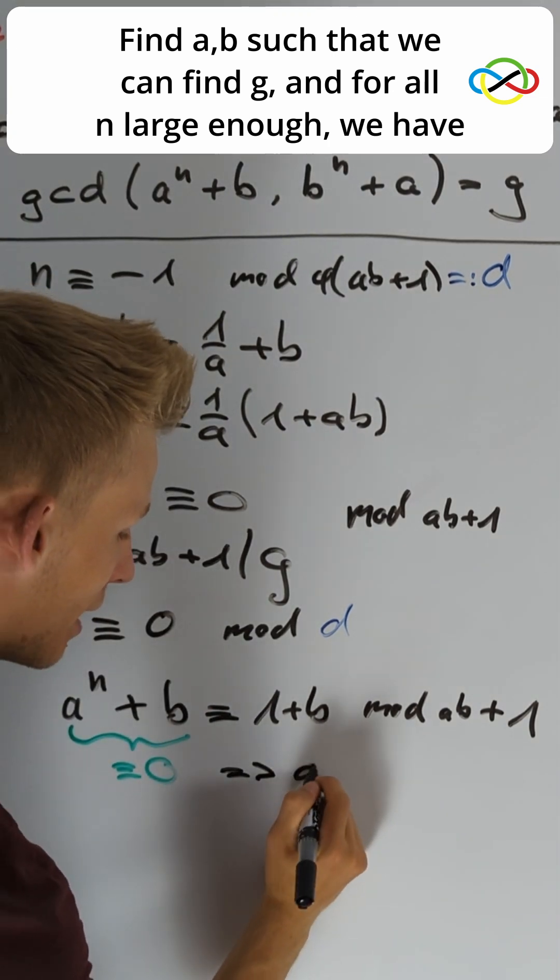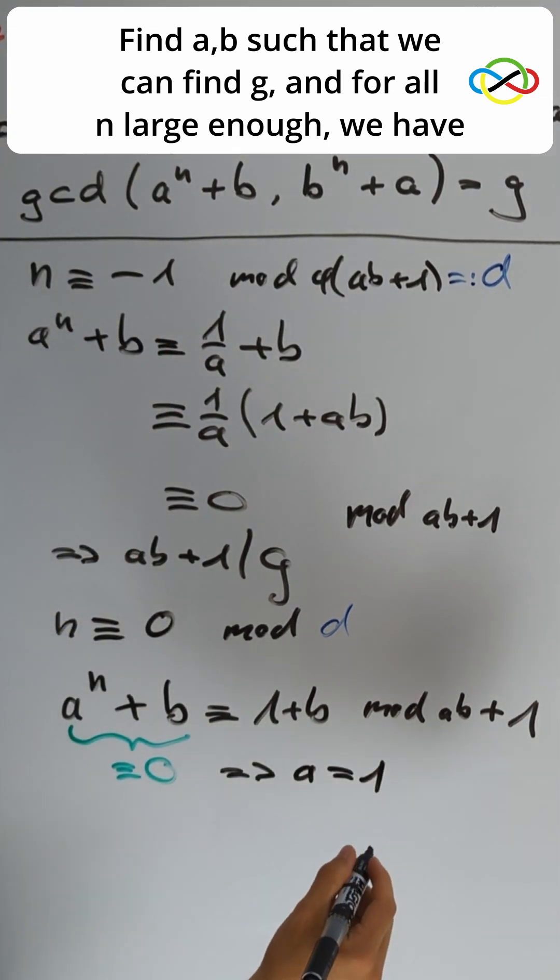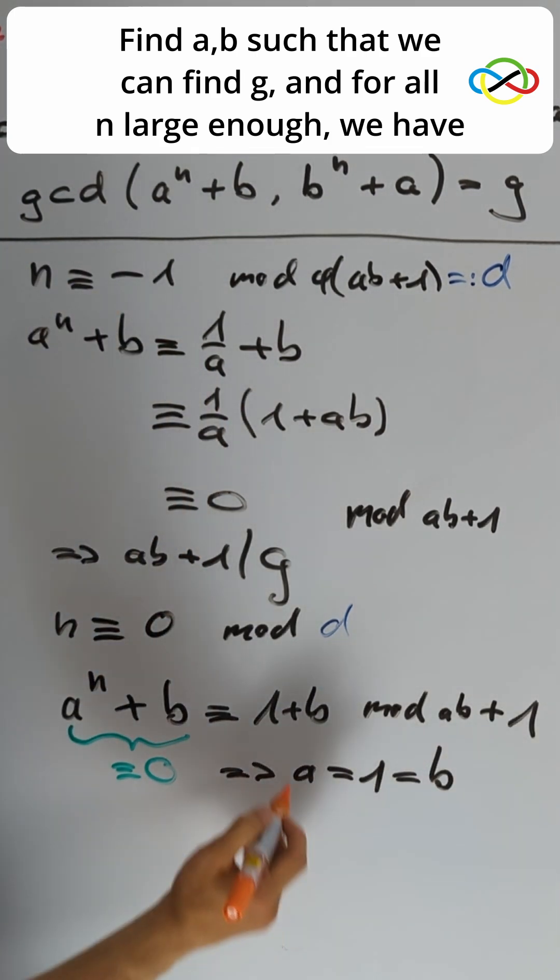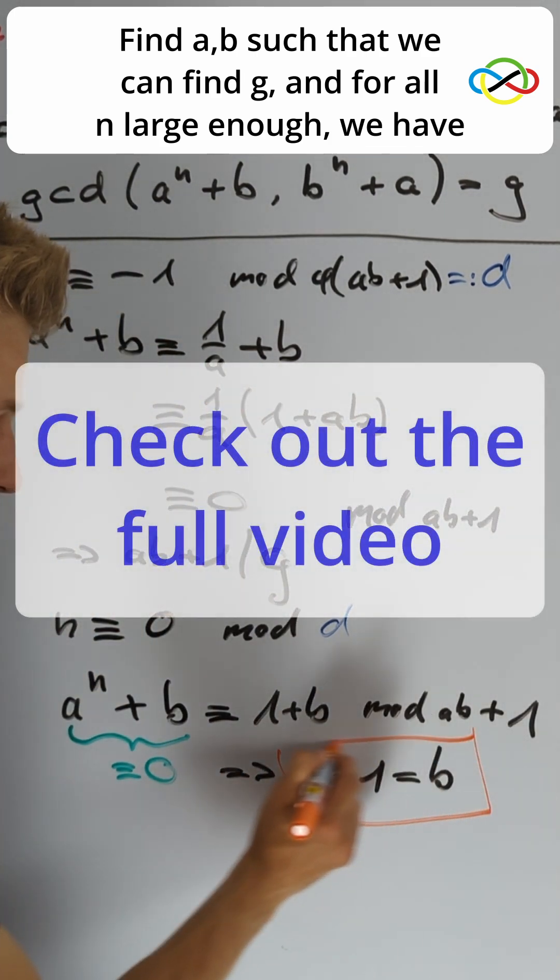We conclude that a equals 1, and in the same way we get that b equals 1. We can check that this works, and so this is our only solution.